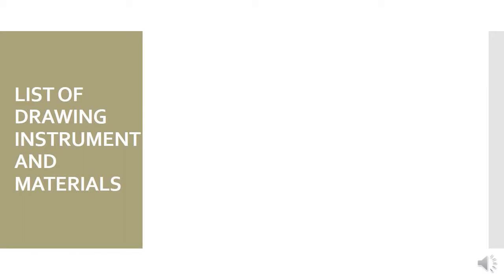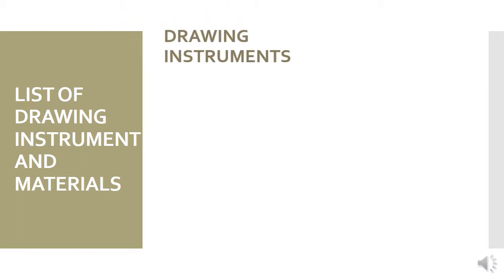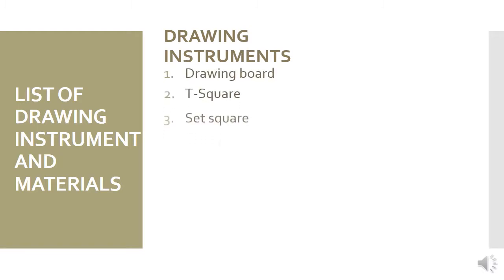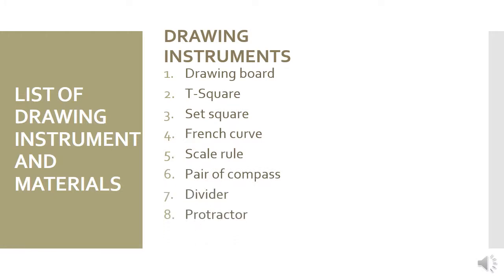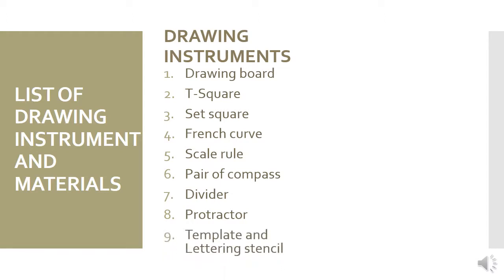List of drawing instruments: 1. Drawing board, 2. T-square, 3. Set square, 4. French curve, 5. Scale rule, 6. Pair of compass, 7. Divider, 8. Protractor, 9. Template and lettering stencils. Drawing materials: 1. Paper, 2. Pencil, 3. Eraser, 4. Paper tape, 5. Cleaves, 6. Brush, 7. Pencil sharpener.